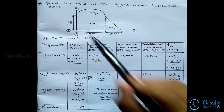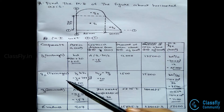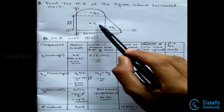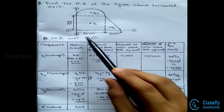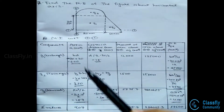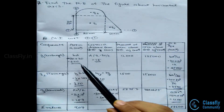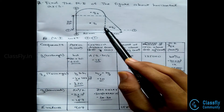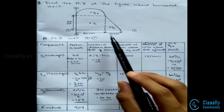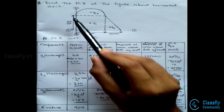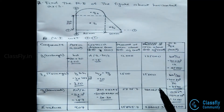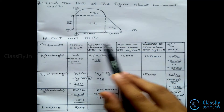Consider the first component, rectangle G1. The area is given by b×d, that is 20×30, which is 600. The centroid distance from the 1-1 axis is dy/2, that is 30/2, which equals 15.